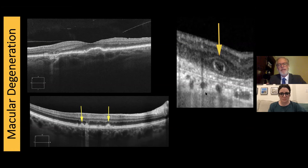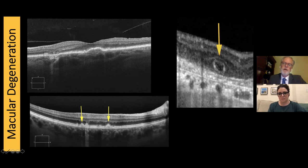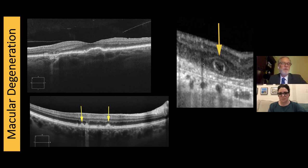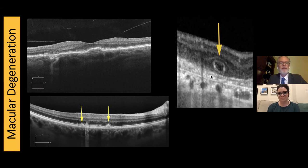Hard drusen have a peak or triangular shape, while soft drusen are rounded — very easy to differentiate. In advanced dry AMD or geographic atrophy, we often see little circular findings. Oriented on the scan: this is Bruch's membrane, RPE, photoreceptor cell layer up here, external limiting membrane going around the circular finding. This is outer retinal tubulation, or ORT — the photoreceptor cell layer curled up into a circular ball. We see a lot of these in advanced dry AMD, often alongside intraretinal or subretinal fluid.